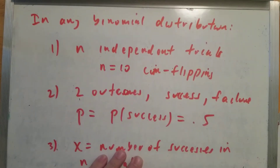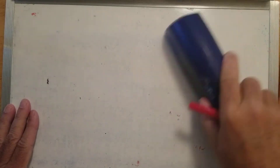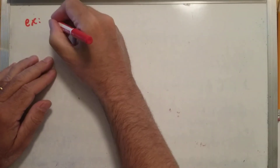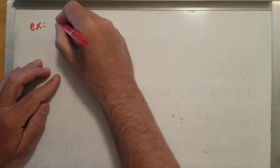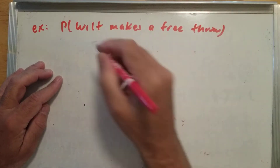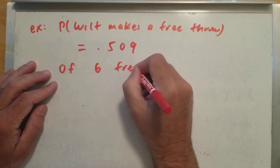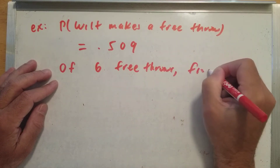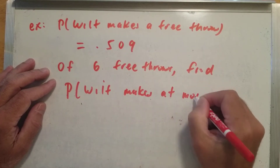There are five possible formulas to use here — five different kinds of questions. That was the first kind: exactly x successes in n trials. Now let's try another example away from coin flipping. Suppose the probability that Wilt makes a free throw — basketball — is 0.509. Of six free throws, find the probability Wilt makes at most four.